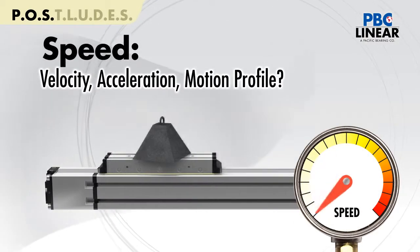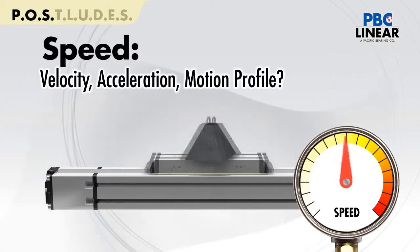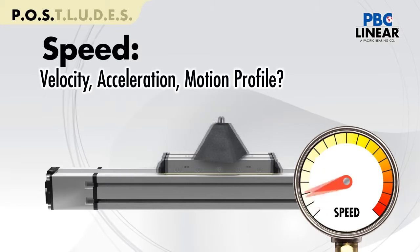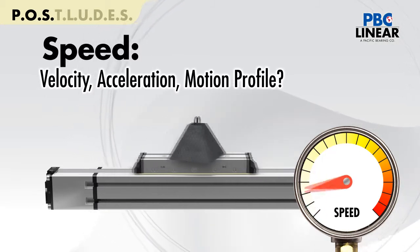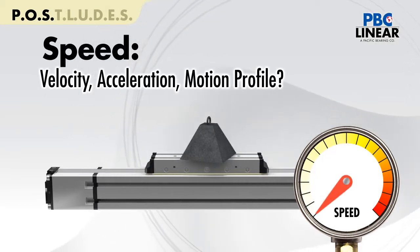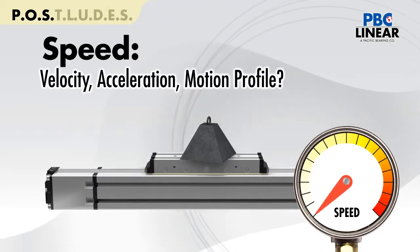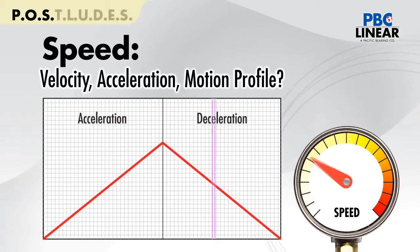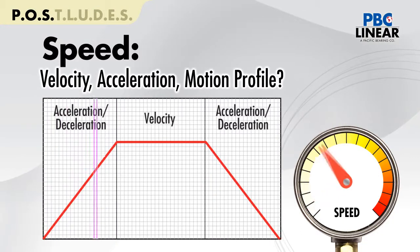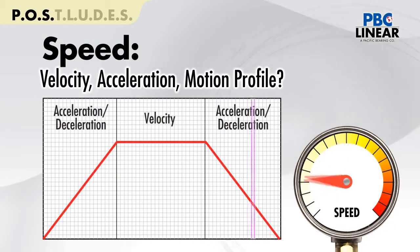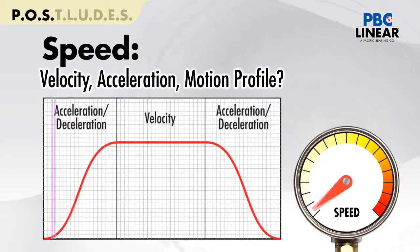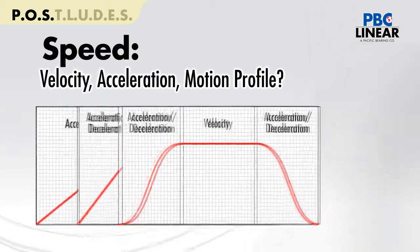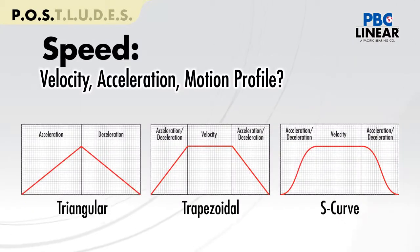S is for speed. Speed includes the velocity, acceleration, and deceleration of the load being moved. This also relates to the motion profile of the load, whether the load motion is triangular, trapezoidal, or S-curve. The dynamic motion of the load plays a large role in determining the right product to select.